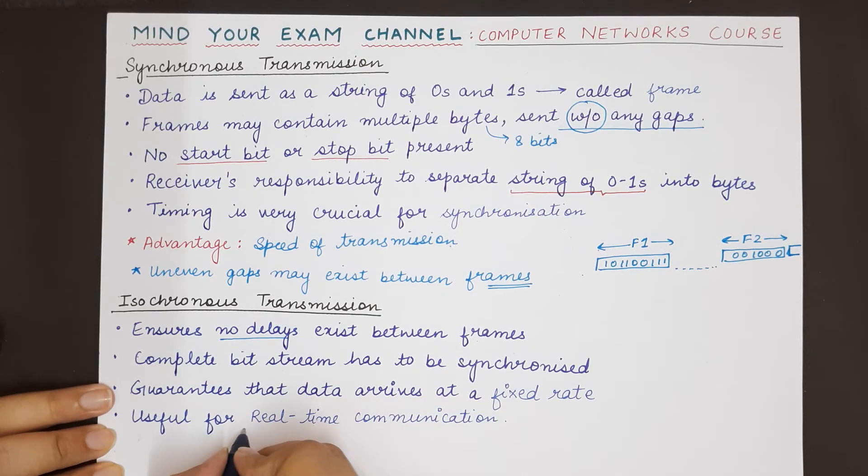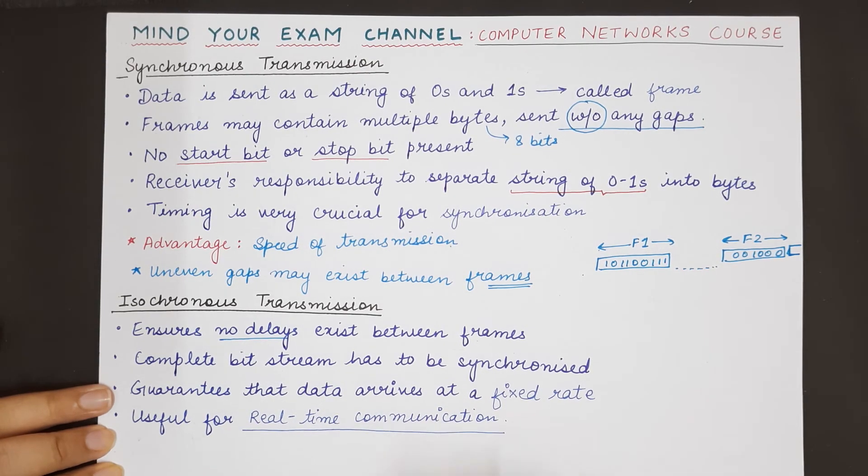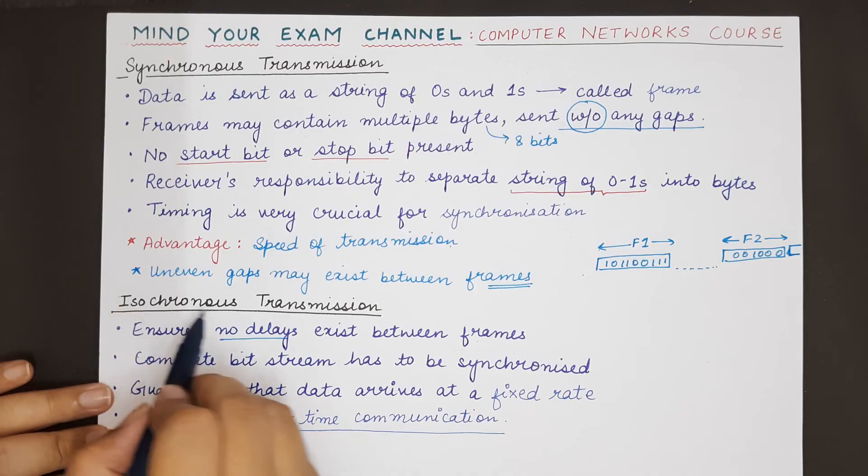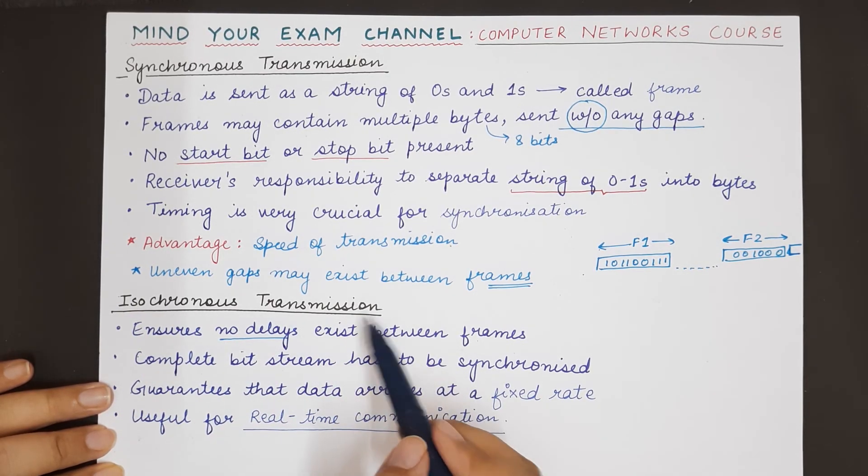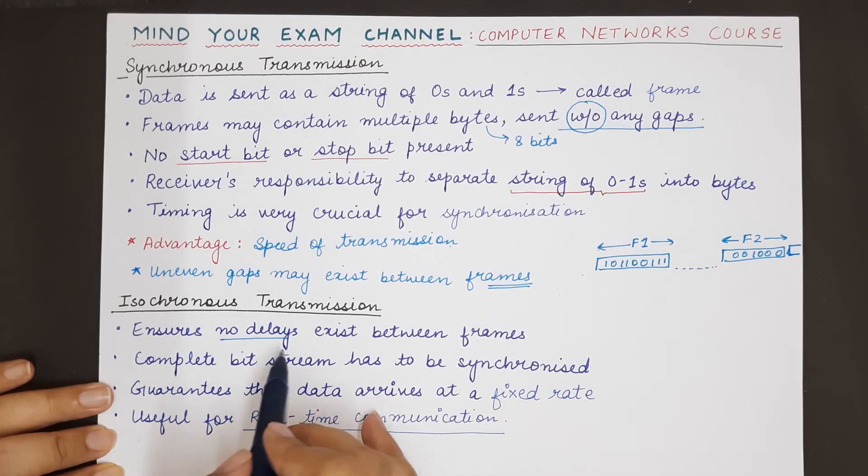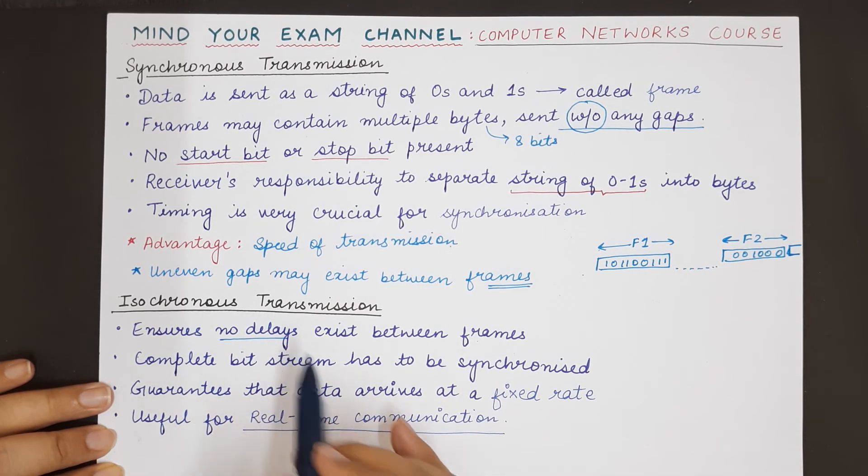Any kind of real-time communication should use isochronous transmission, because in isochronous, the frames do not have any time delays between them.